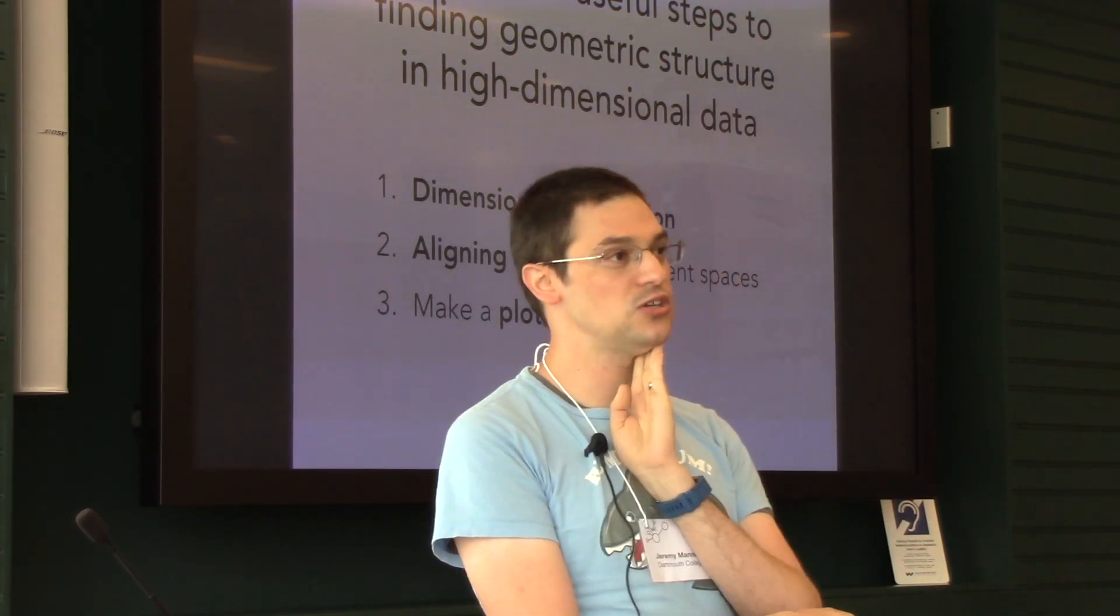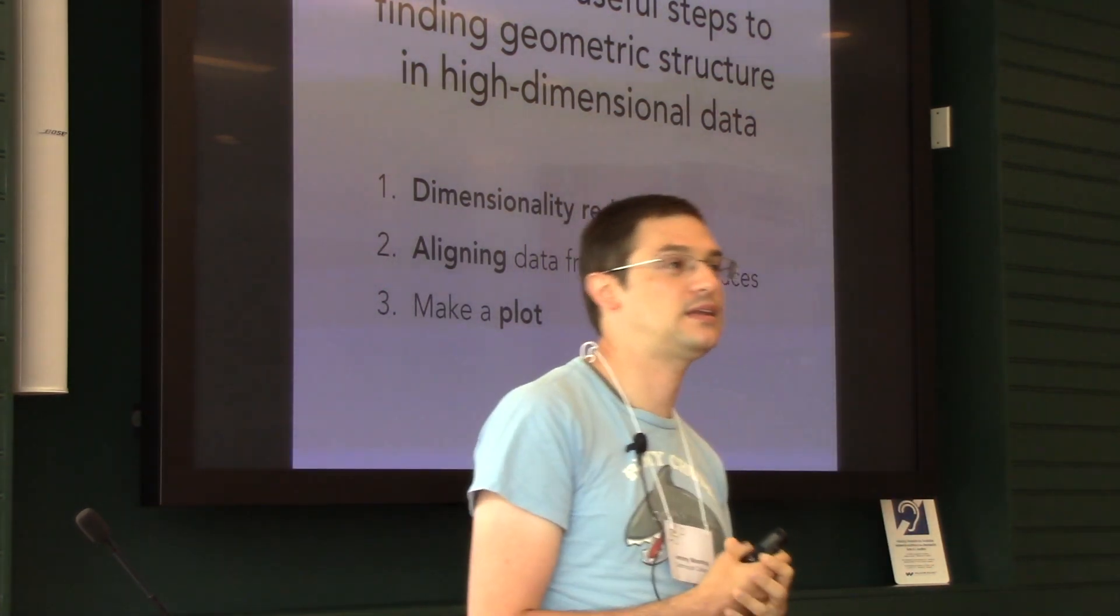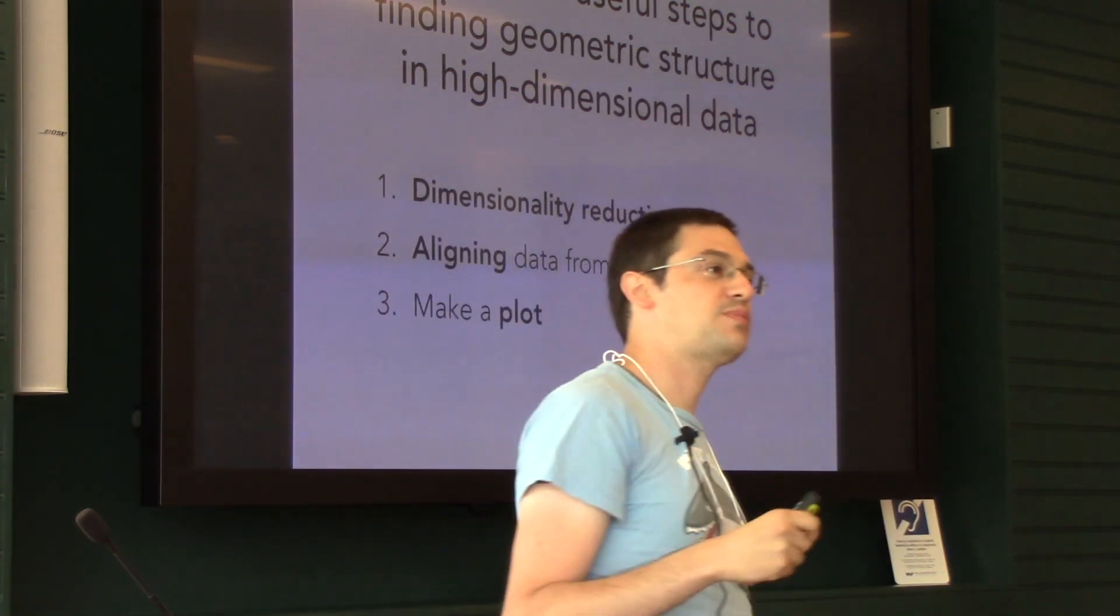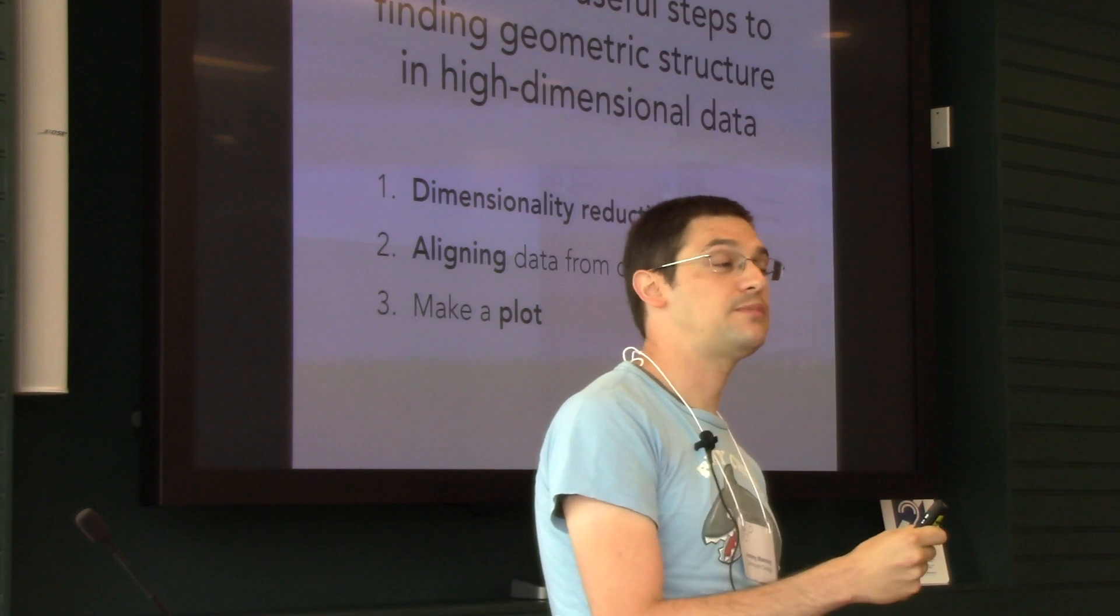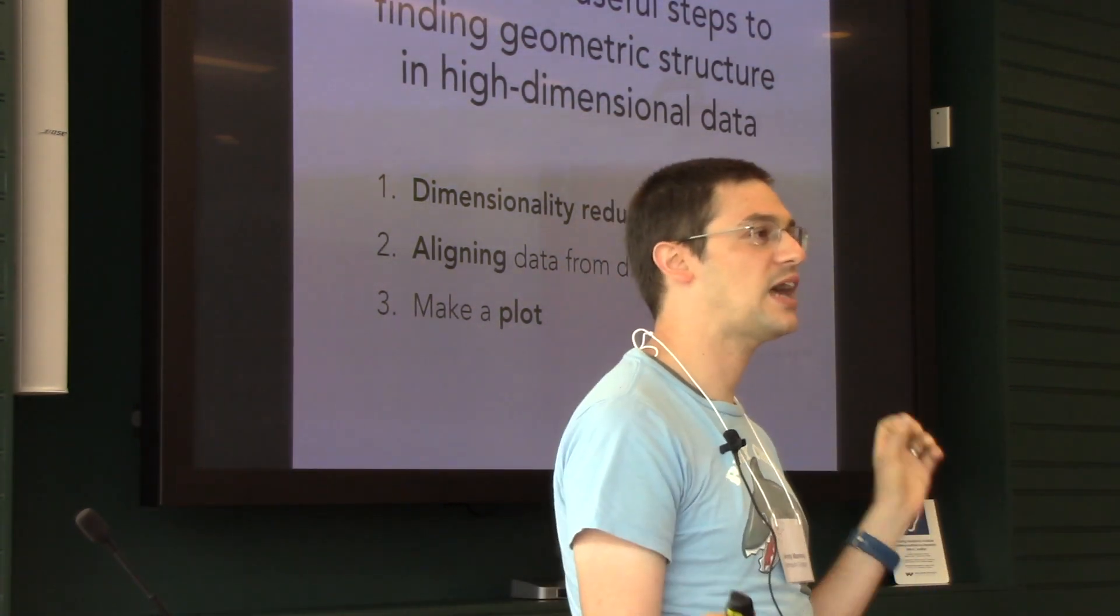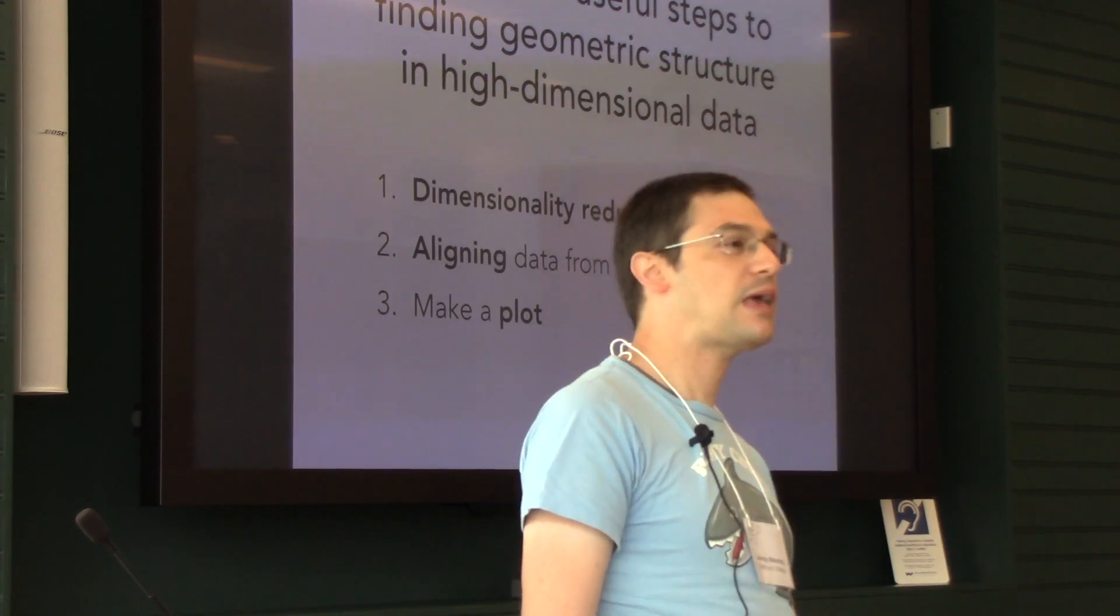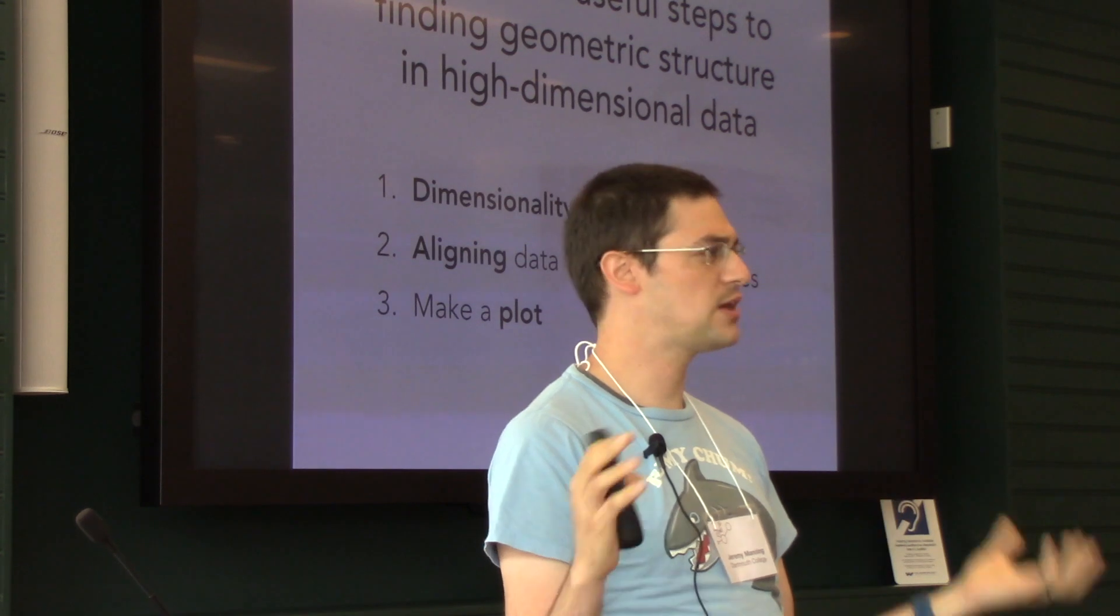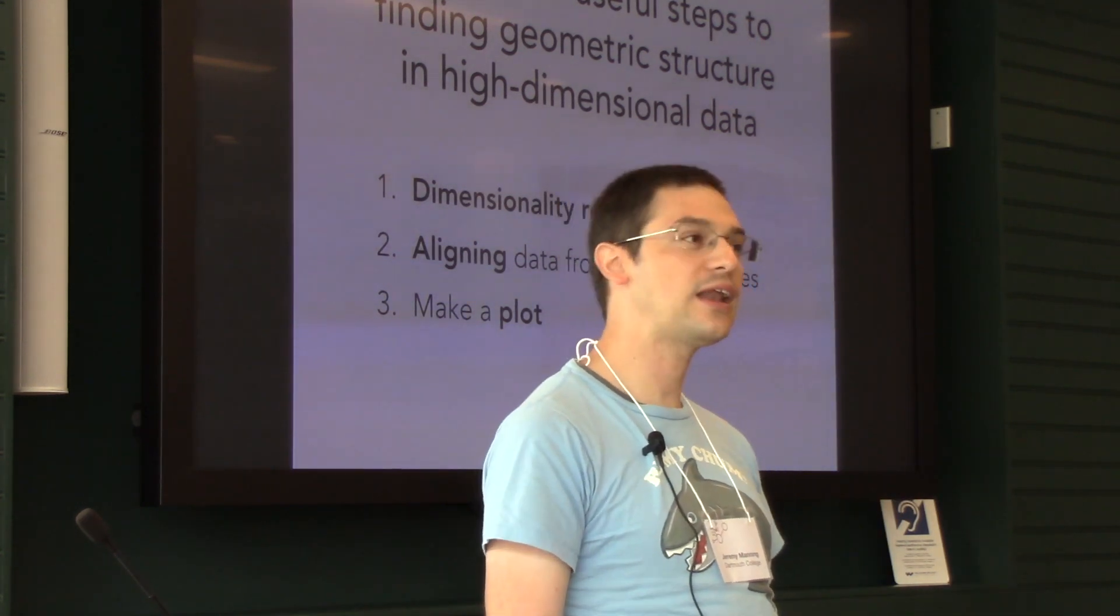The second generally useful step is alignment. You might have brain patterns from different people or brain patterns and movie data. The data come in and live in different spaces, but you want to know how they relate to each other.